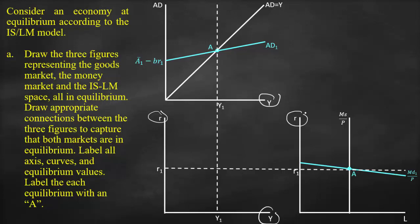Checking the ISLM model, we have a point at R1 and Y1, which is our equilibrium point labeled A. We draw the downward IS curve and the upward LM curve to intersect at point A. From the three markets, we can see that all of them are at equilibrium: the goods market at point A, the money market at point A, and the ISLM model at point A.